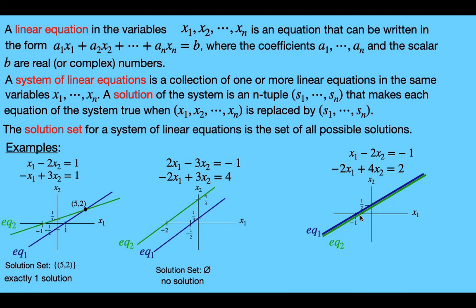The second equation is the same line, so every solution to the first equation is also a solution to the second equation. The solution set is this entire line: all pairs (x sub 1, x sub 2) such that x sub 1 minus 2x sub 2 equals negative 1. Equivalently, you could write the second equation — it's the same idea. This system has infinitely many solutions.